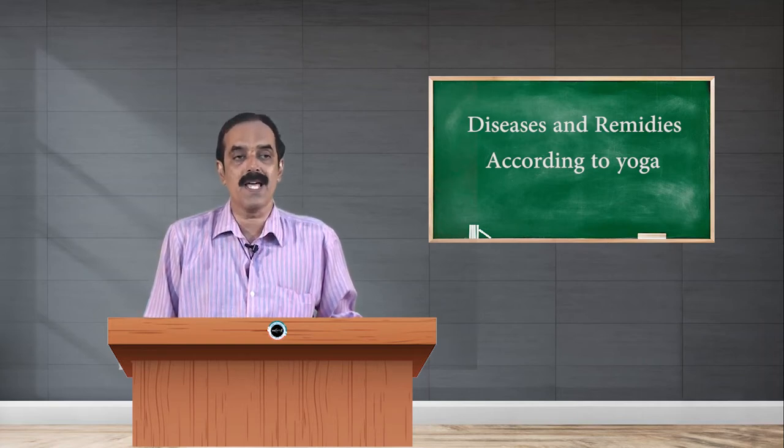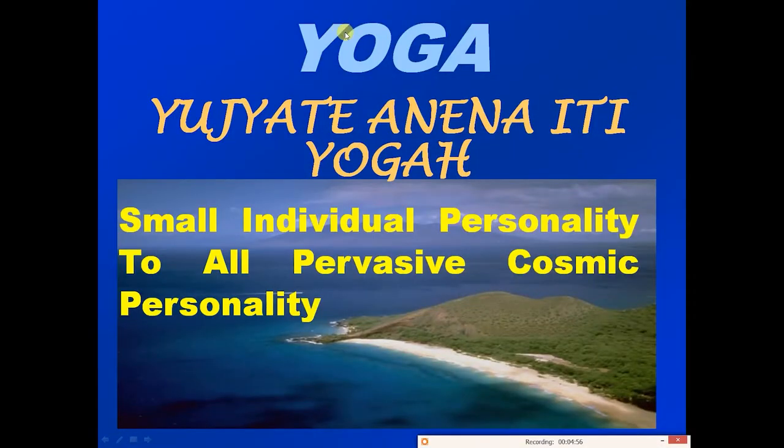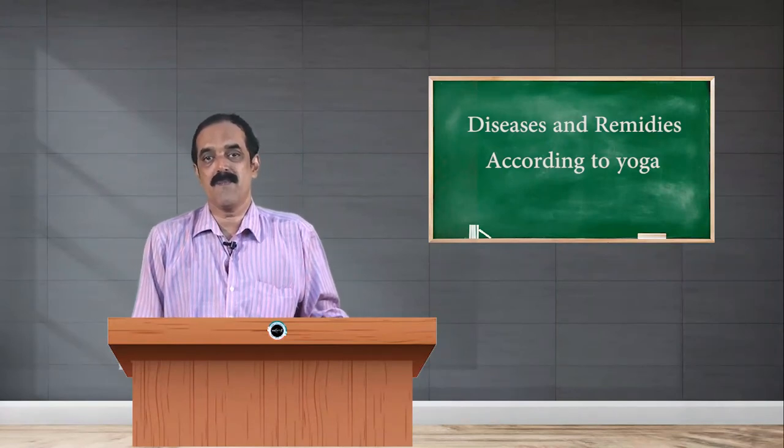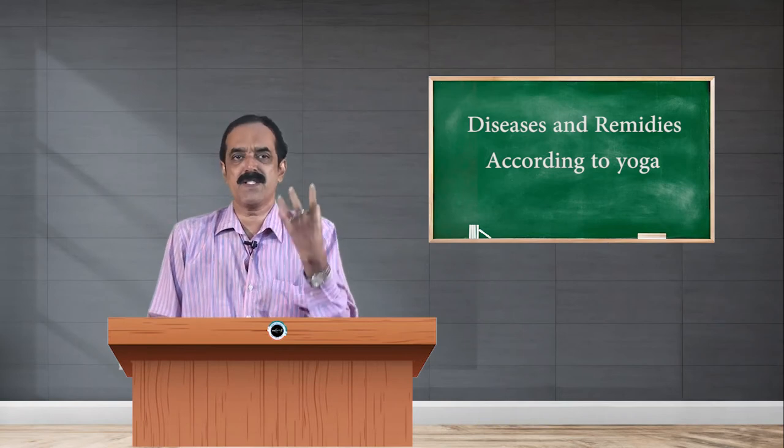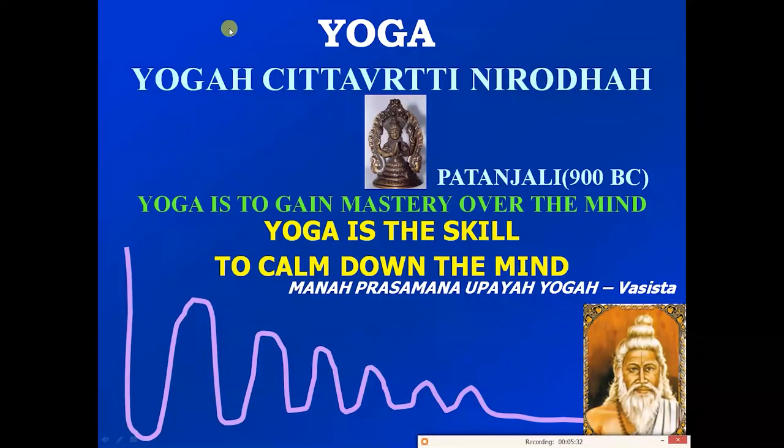The definition of Yoga itself says Yujyate Aneenayiti Yoga - joining small individual personality to all-pervasive cosmic personality. Yoga takes you from animal level to superhuman being. When you are in a small personality, stress will affect you. When your personality is growing bigger and bigger, stress is nothing for you. That's why Patanjali says Yoga Chitta Vritti Nirodha - yoga is a skill to calm down the mind and gain mastery over the mind.